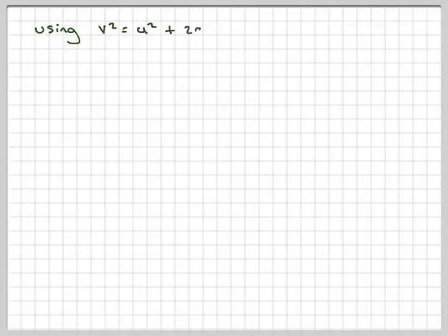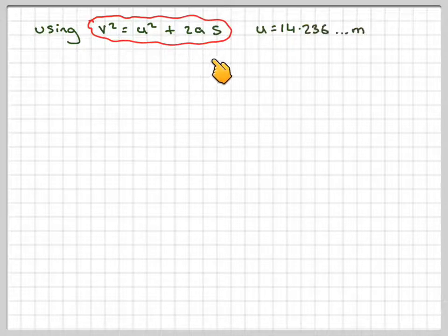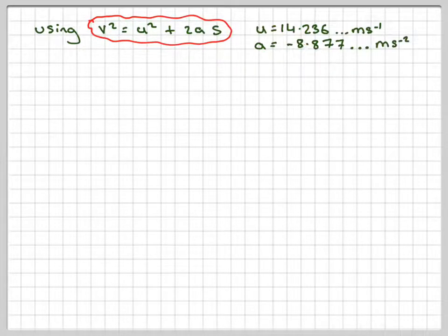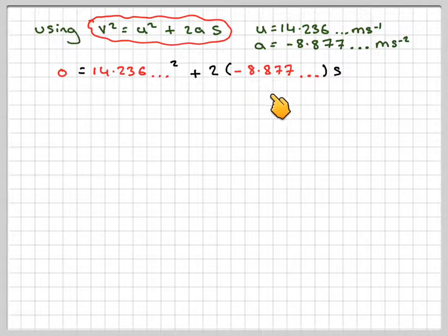So, using V squared is equal to U squared plus 2AS, with U being equal to that value, A being equal to that value that we just calculated, make sure you've stored it in your calculator. So, 0 will be equal to 14.236 squared plus 2 times minus 8.877s. By the way, you would expect this to be negative, because the block is slowing down.